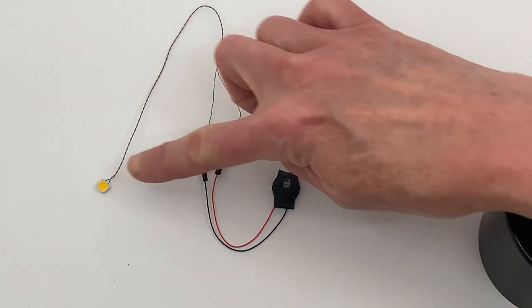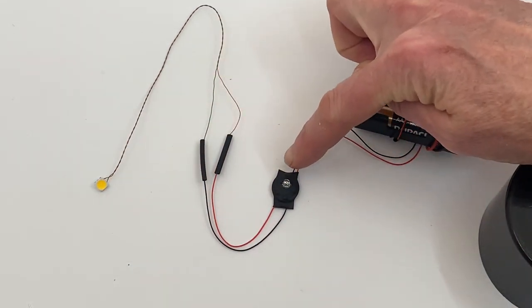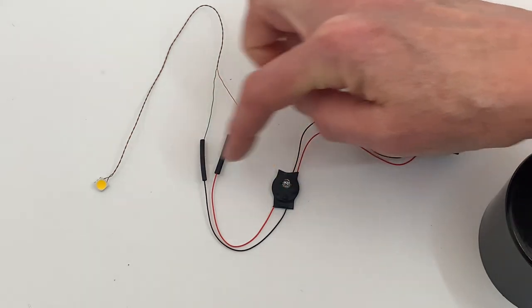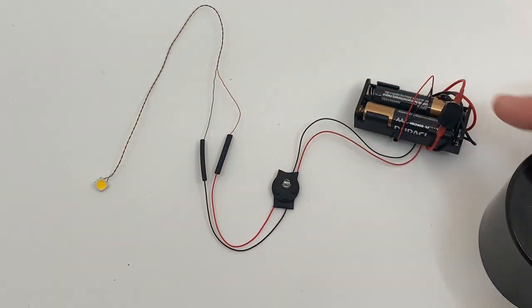One thing to remember, you don't want this light shining at the photo sensor because when it gets dark enough, the light comes on, the photo sensor will go back off.